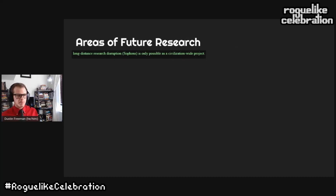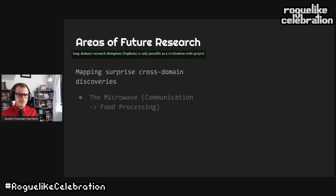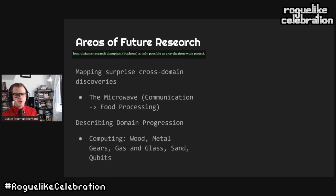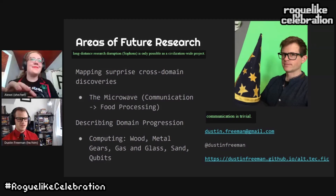From this spot in my tech tree I see two interesting things ahead. First: mapping cross-domain discoveries — sometimes we invest a lot of effort in a domain and there is a chance of discovering something in an alternate domain. The microwave was funded by communication domain technology research and we ended up with a food processing technology out of it. Second: describing domain progression. In the history of computing the media used for computing was wood, then metal gears, then gas and glass like vacuum tubes, now sand like transistors, and now qubits — although that might be a crapshoot. Thank you for attending my talk. In this universe communication is trivial so you can reach out to me, and I will see you around the telepresence conference space.